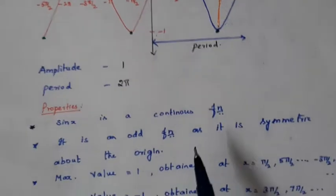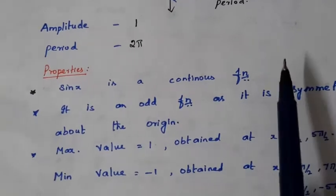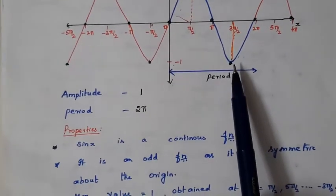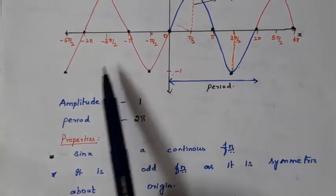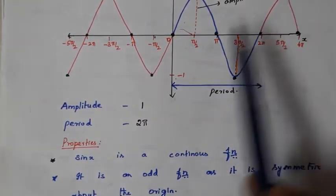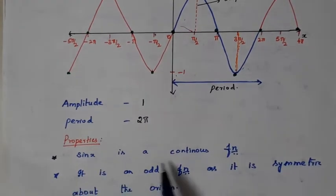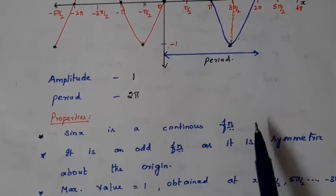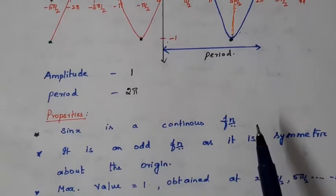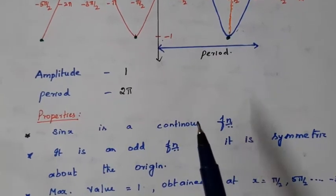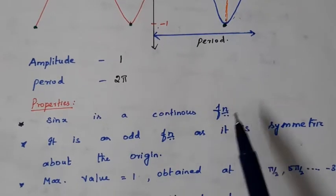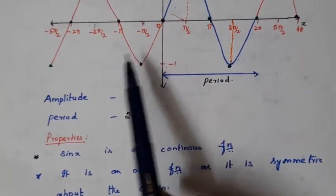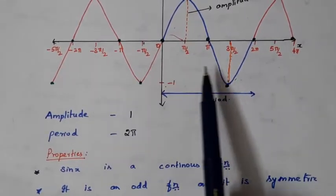From this graph, we can get some properties by analyzing the function just by looking at the graph. We can see that there is no break in the graph — the graph goes continuously. Therefore, sine x is a continuous function. If there is any break in the graph, the function is not continuous. If there is no break, the function is continuous.